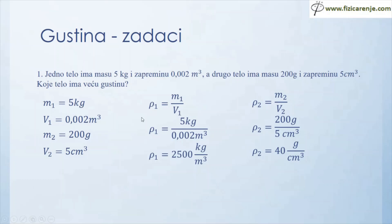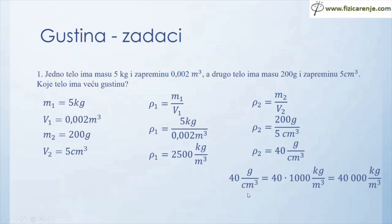U zadacima pazite: radite sve u kilogramima i metrima kubnim, ili sve u gramima i centimetrima kubnim kada koristite neki od ovih obrazaca. Ovdje sam koristio kilograme i metre kubne, a ovdje grame i centimetre kubne. Dobijene vrednosti gustina su u različitim mernim jedinicama, pa je potrebno prebaciti jednu od dve gustine. Tako ću 40 g/cm³ prebaciti u kg/m³: 40 puta hiljadu je 40.000 kg/m³. Sada su merne jedinice iste i mogu da uporedim: 40.000 je veće od 2500, pa je veća gustina drugog tela.